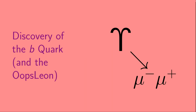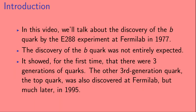Welcome to 'Discovery of the B Quark and the Oops-Leon.' In this video, we'll talk about the discovery of the B quark by the E288 experiment at Fermilab in 1977. The discovery of the B quark was not entirely expected, but it showed for the first time that there were three generations of quarks.